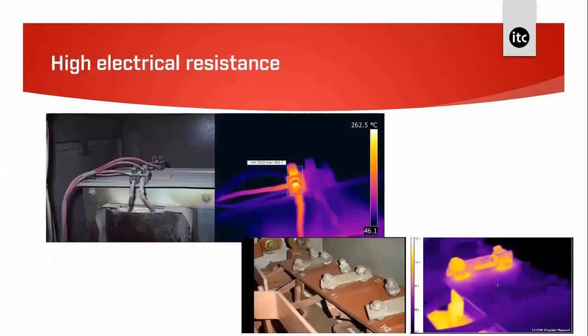These are examples of high electrical resistance on transformer connections. Both images use the iron color palette where white is hot and black is cold. If you look closely, you can see very definite elevated temperatures within both thermal images.